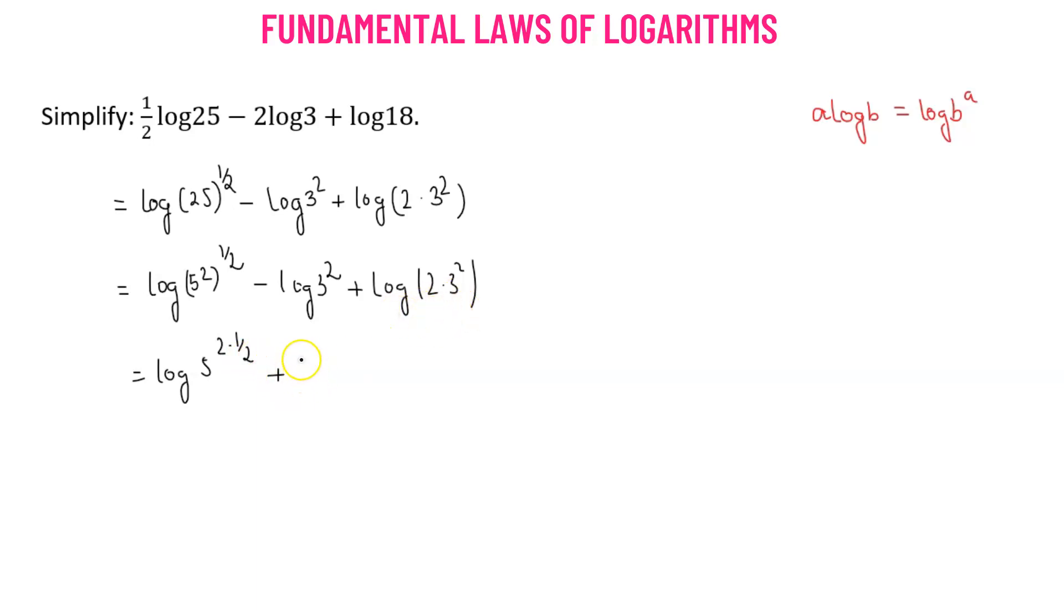We'll write this third term as the second term. We have log of 2 times 3 squared minus log of 3 squared. The 2 and half gets multiplied to give us 1, so we have log of 5 plus log of 2 times 3 squared minus log of 3 squared.